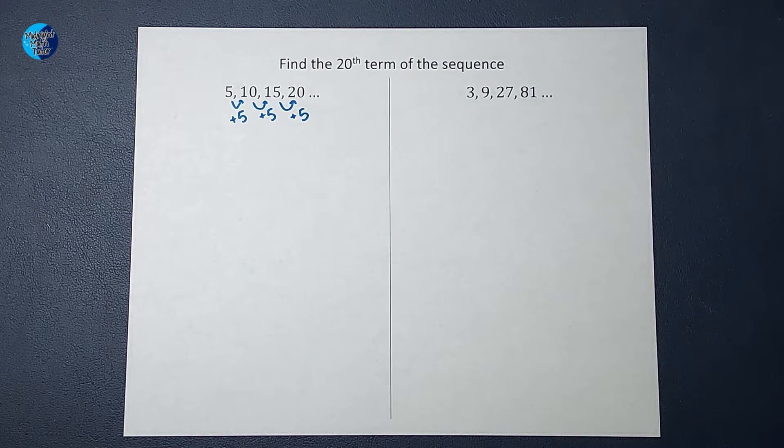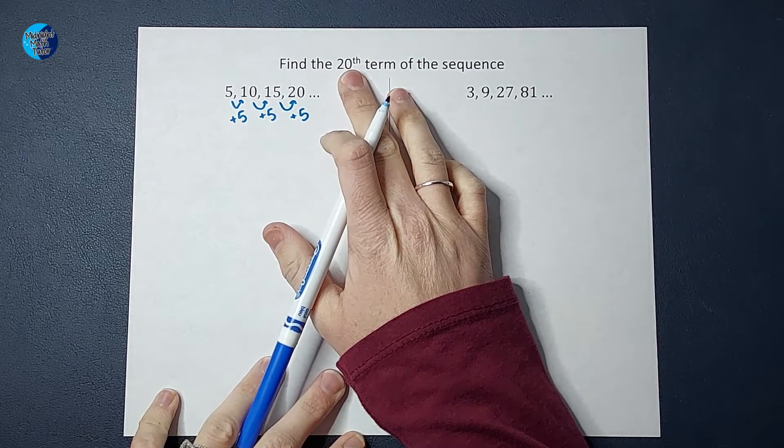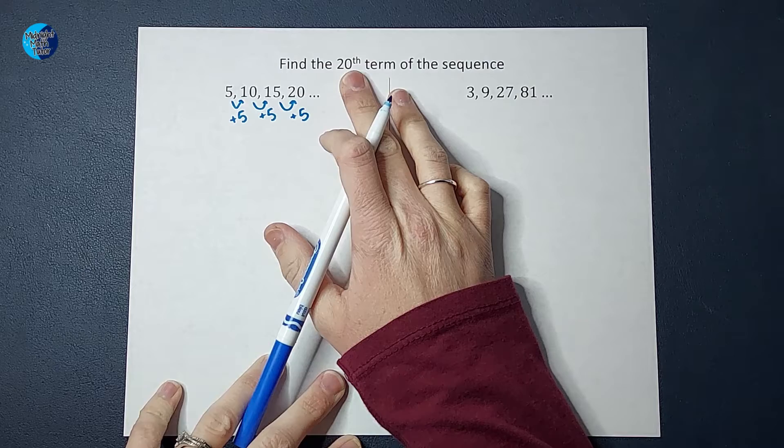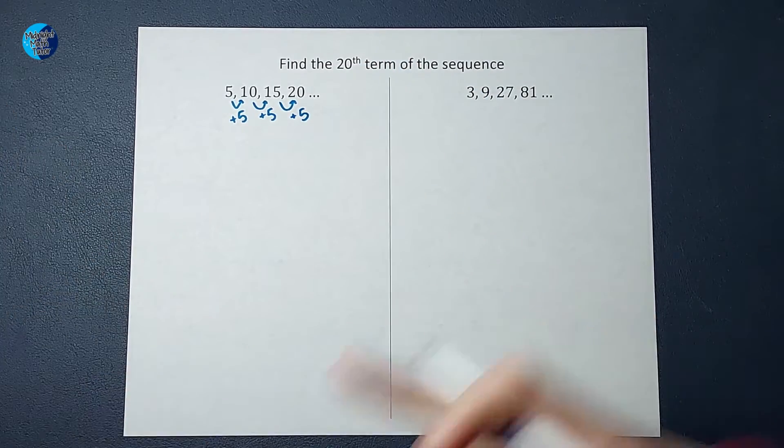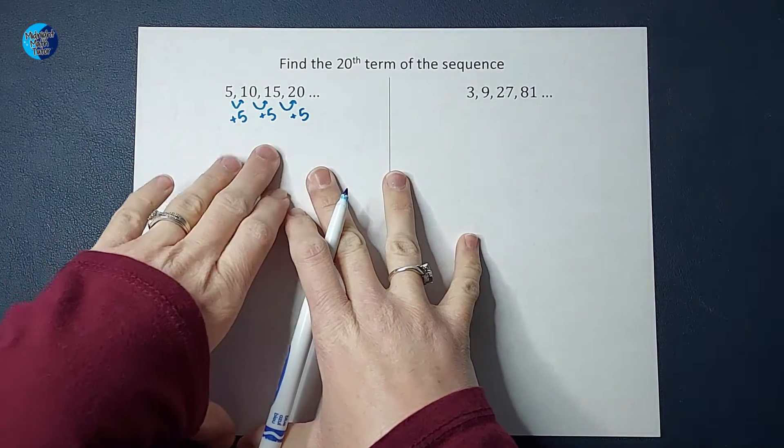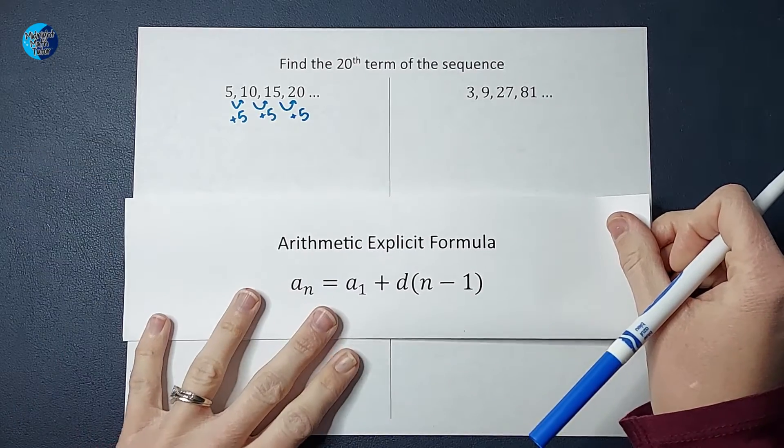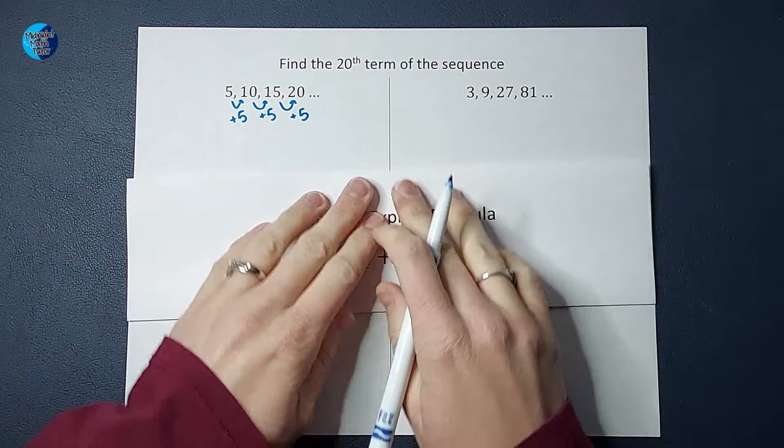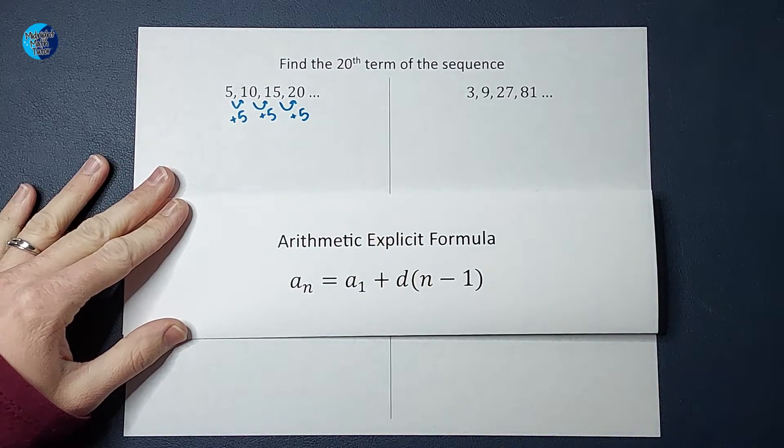And so I want to find, okay, well, first of all, I could just keep adding five till I got to the 20th term, right? But I don't really want to do that, but that is an option. But I want to use math as a tool to help me find it without having to add it so many times. So we are going to figure out the explicit formula for this sequence. I know it's arithmetic because we are adding the same number over and over again. So I'm going to use my little formula here, but we're going to talk about it as we do it, so we're not just memorizing it.